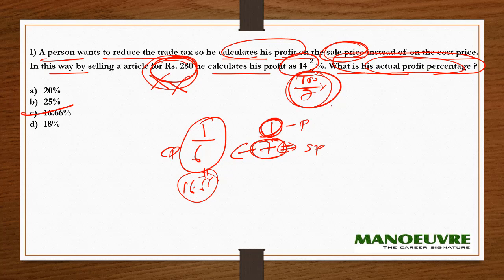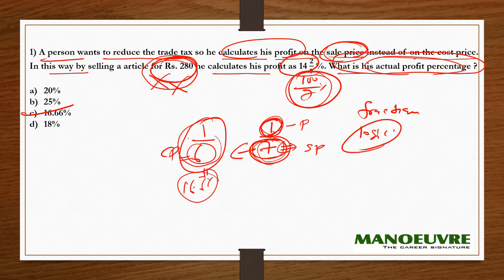I hope this is clear. To understand such questions, you should be good at fractions and your logic has to be strong. Again: 7 is the selling price and 1 is the profit, so the cost price is 6 and the profit is Re. 1. Profit percent is always calculated on cost price, so 1/6 is the profit percent, which is 16.66 percent.